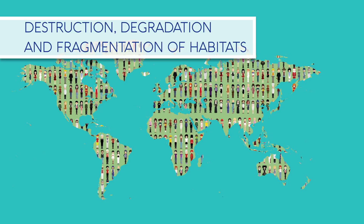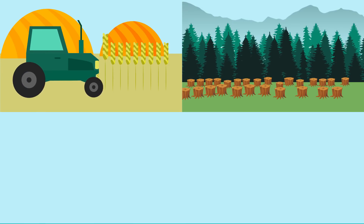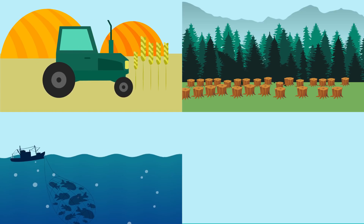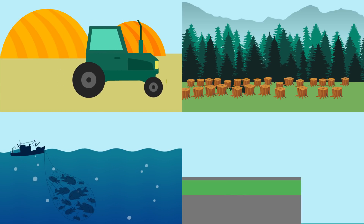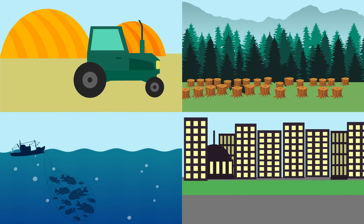Habitats have been destroyed in favour of agriculture, forestry, fishing, urbanisation, and manufacturing. Habitat loss has greatly reduced species richness.